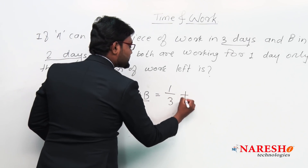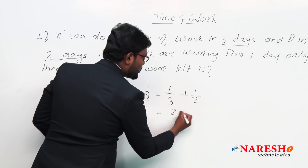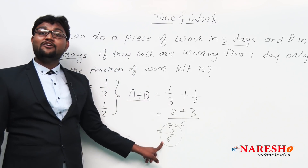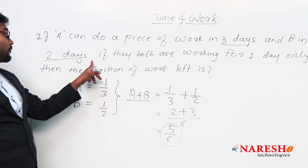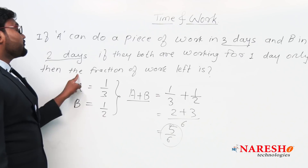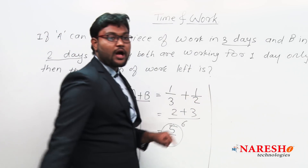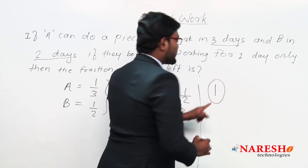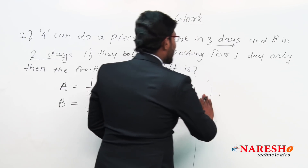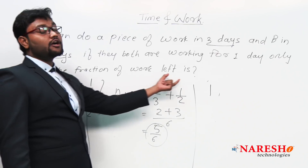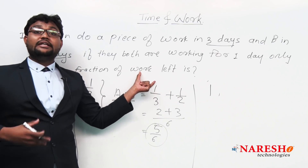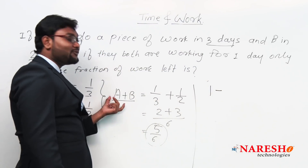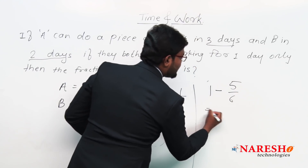Now I add their one-day works: one by three plus one by two. The LCM of three and two is six, so this gives two plus three divided by six, which equals five by six. That means in one day, both together complete five by six of the total work.